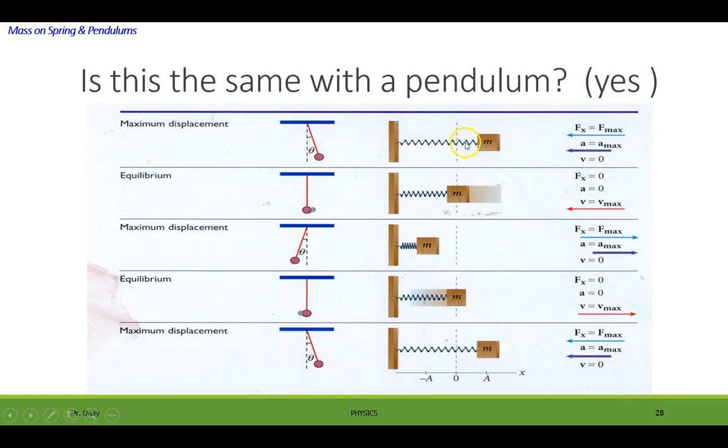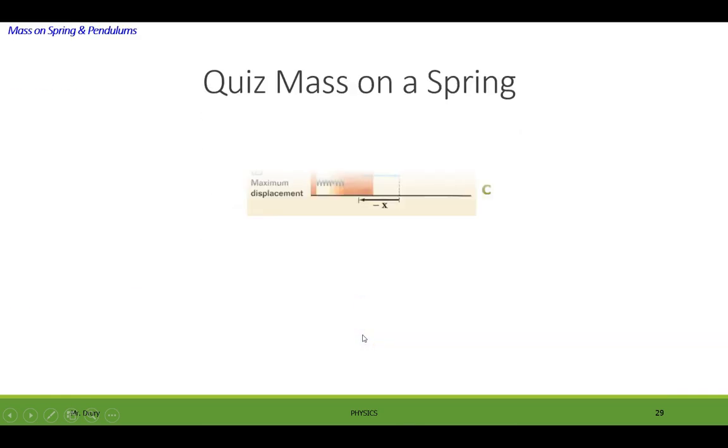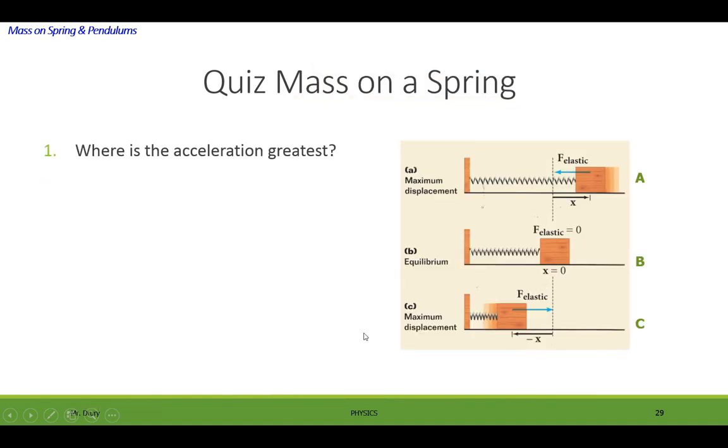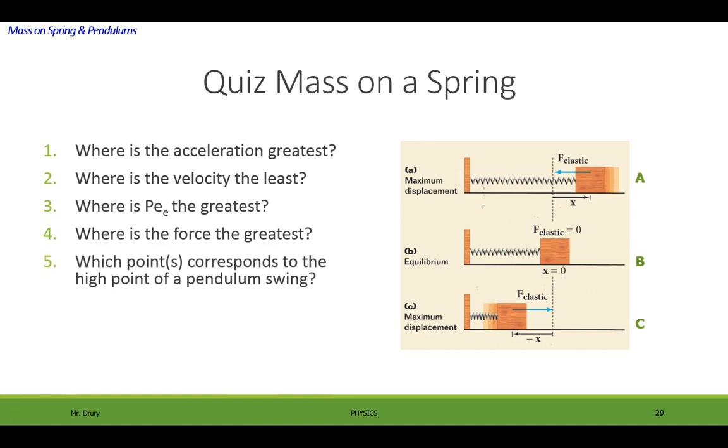Think of a pendulum being pulled out. It's the same thing as a spring being pulled out. The pendulum hanging straight down. The same as the mass being on the spring being on its equilibrium position. And you can see the correlation between the two. All right. So now what I would like you to do is take a moment, look at these questions, and see if you can determine where this occurs. Like where is the acceleration greatest?